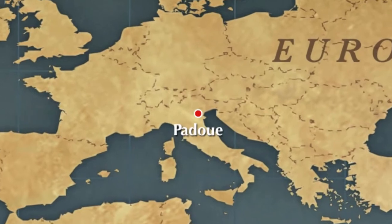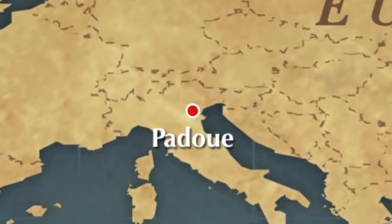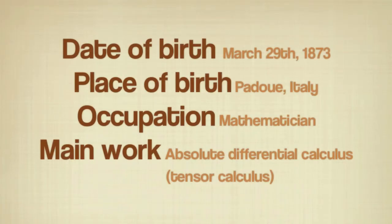Tullio Levi-Civita was born on March 29th, 1873 in Padua, Italy. He was an Italian mathematician known for his work on absolute differential calculus, which we also call tensor calculus.